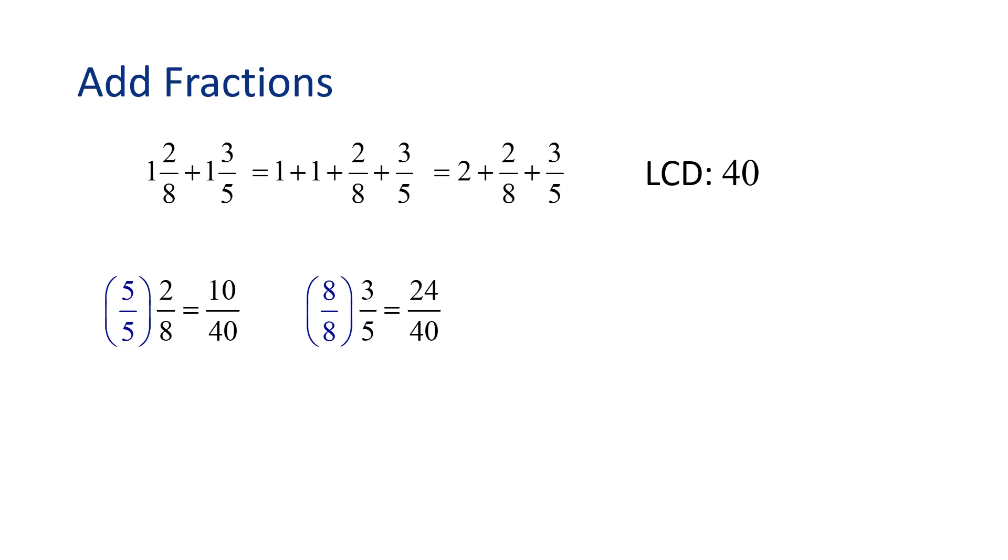Now we can rewrite the problem as 2 plus 10 40ths plus 24 40ths. Adding the fractions together, we add the numerators, and we get 2 plus 34 40ths. When we write mixed numbers, we do not write the addition sign between the whole number and the fractional part, so we can remove that and just say 2 and 34 40ths. Great job!